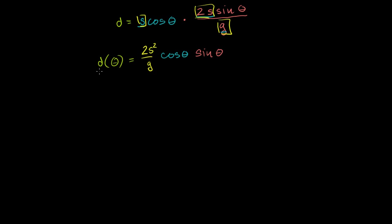Now that we have distance explicitly as a function of the angle that we're shooting the object at, we can use a little bit of calculus to figure out the optimal angle — the angle that's going to optimize our distance. Since we only care about angles from 0 degrees to 90 degrees, let's constrain ourselves: theta is going to be greater than or equal to 0 and less than or equal to 90.